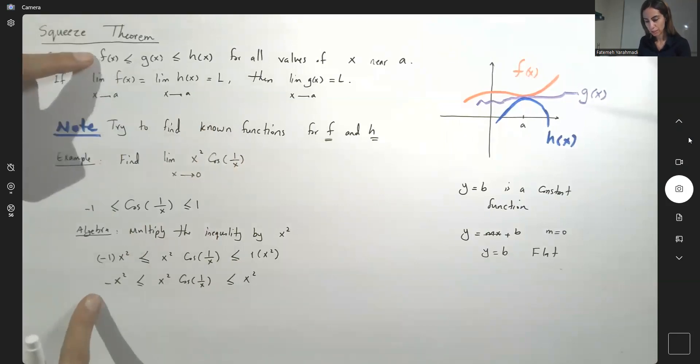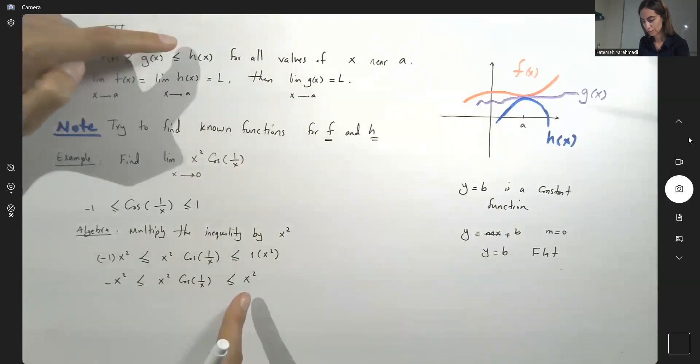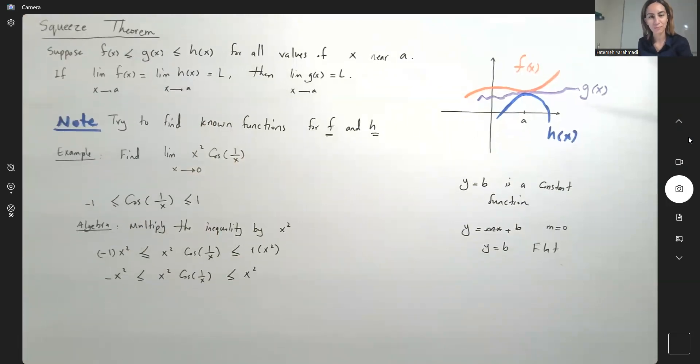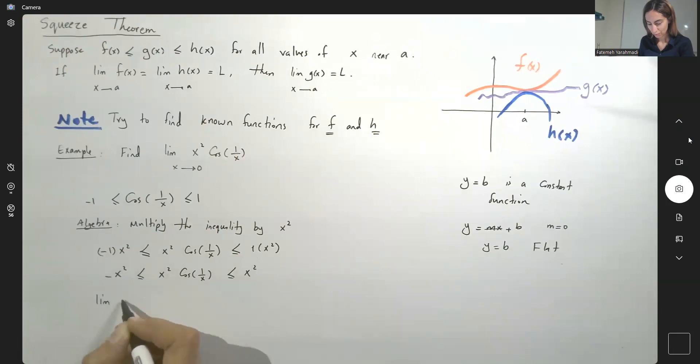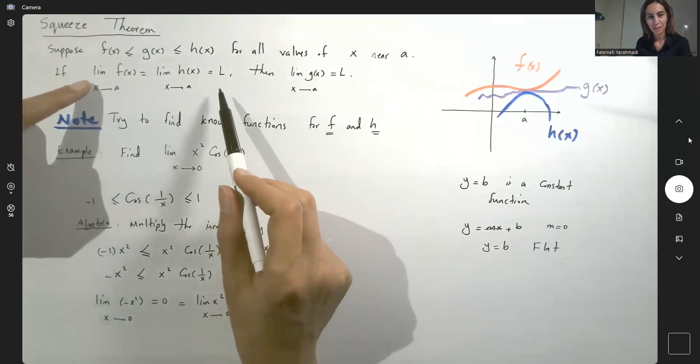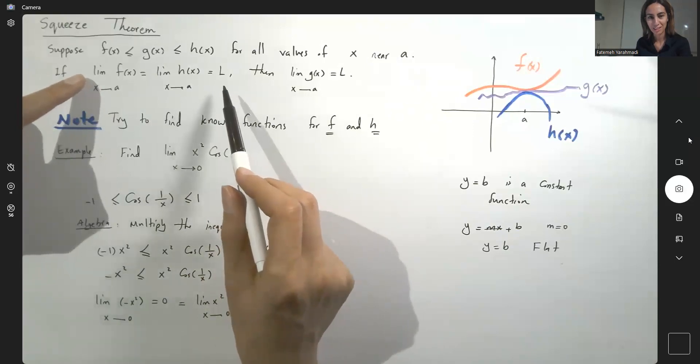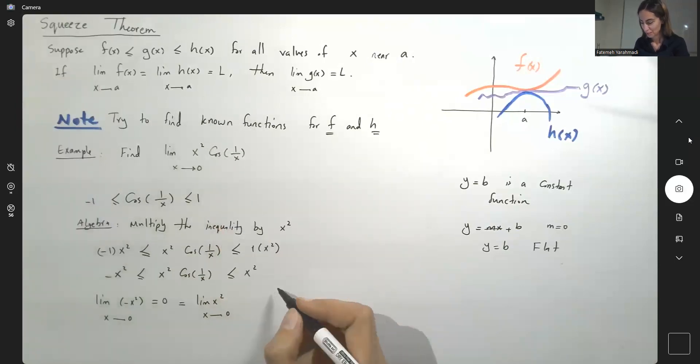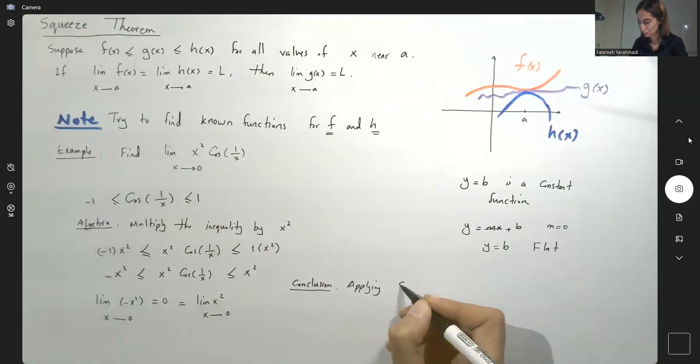We found our f. We have our g and this is our h. Now take the limit. Limit of negative x squared as x approaches 0 is 0, which is equal to limit of x squared as x approaches 0. So the upper bound and the lower bound, they both have the same limit at 0.